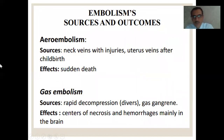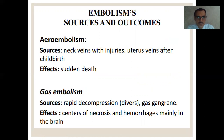Air embolism: sources are neck veins with injuries and uterine veins after childbirth, resulting in sudden death. Gas embolism develops during rapid decompression, in diving, or gas gangrene. It affects centers of necrosis and hemorrhage, mainly in the brain.